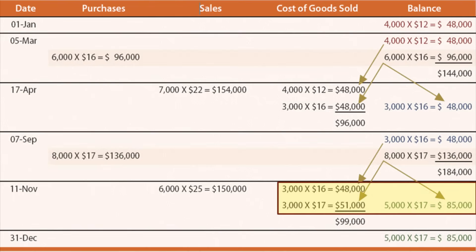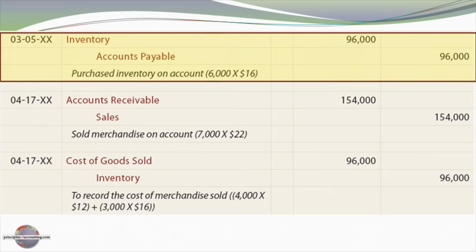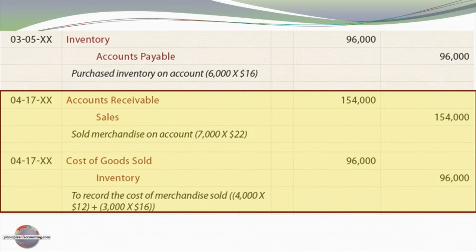We ended the year with 5,000 units at $17 per unit, or $85,000. When we purchased inventory on March 5th, we debited inventory and credited accounts payable for $96,000. On April 17th, we recorded the sale — debit accounts receivable, credit sales for $154,000 — and simultaneously debited cost of goods sold and credited inventory for the $96,000 we had calculated.